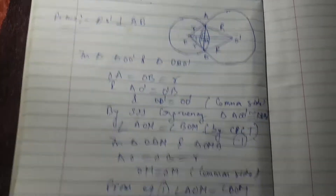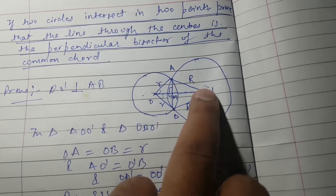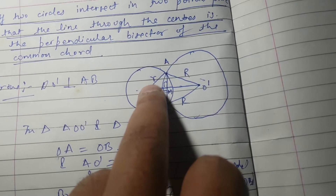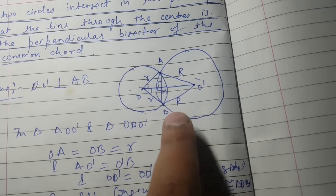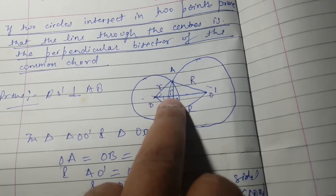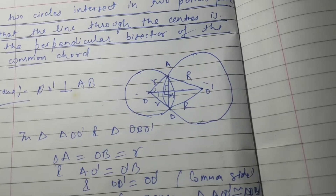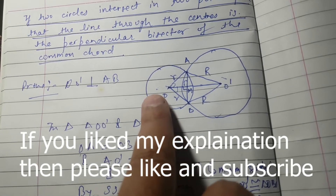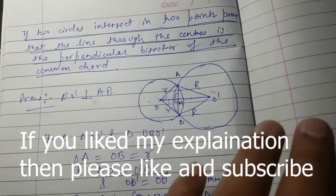We have proved this very easily. First we took the bigger triangles and concluded that angle AOM equals angle BOM. Then with the help of the two smaller triangles we proved them congruent by SAS, and finally concluded that angle AMO equals angle BMO with their sum being 180 degrees — so each angle is 90 degrees. Thus the line through the centers of the circles is the perpendicular bisector of the common chord.